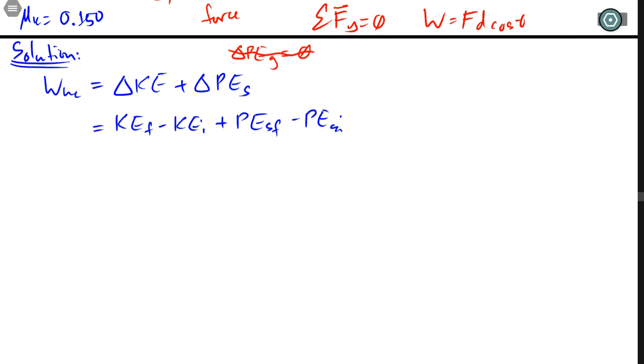And the same thing for the elastic potential energy. If you watched the other video, you know that the initial kinetic energy actually starts at rest, and then the final elastic potential energy is also zero because the final position is actually the equilibrium position. So it simplifies our terms quite a bit, and we're only left with the final kinetic energy minus the initial elastic potential energy.